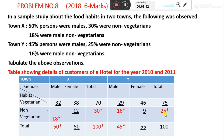25% is the total non-vegetarian for Town Y. 25 minus 16% male gives us 9% female non-vegetarian. This is how we calculate the tabulation of data. Any doubts, please message in the group. Thank you.